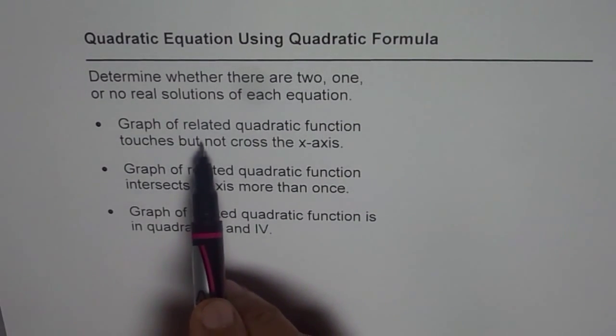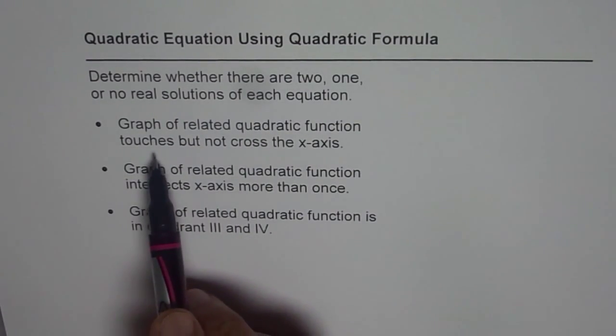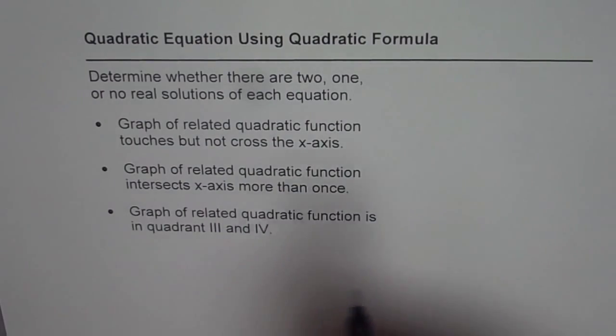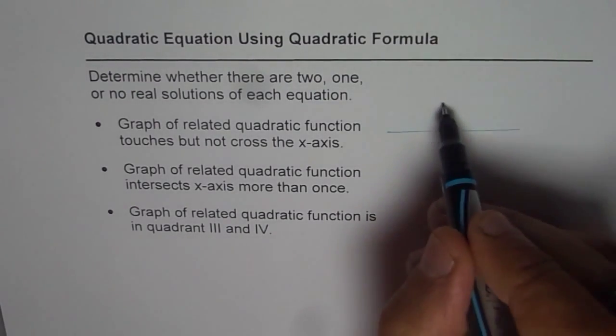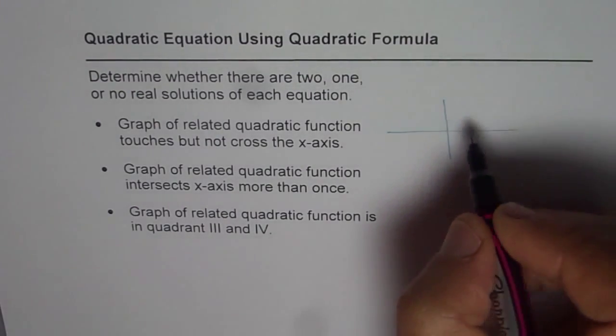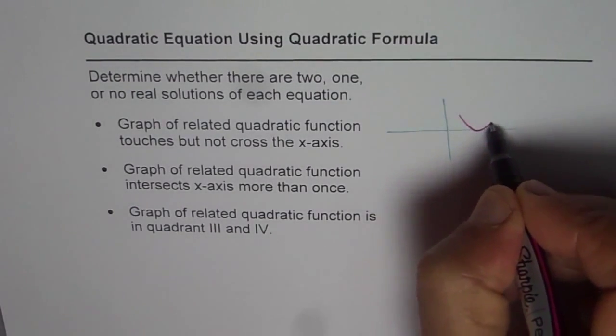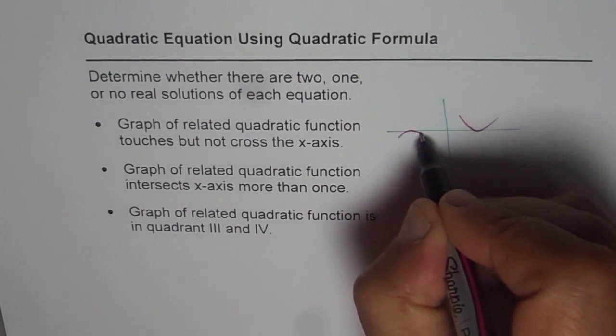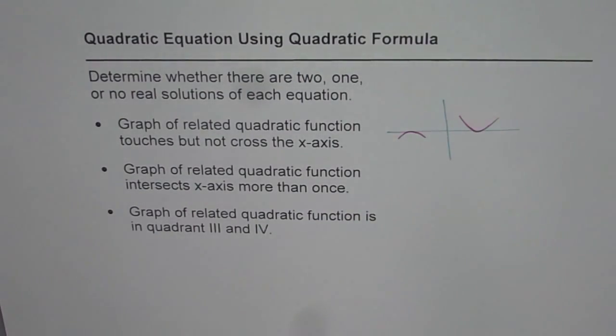Graph of related quadratic function touches but not crosses the x-axis. So that is kind of a situation where the graph could be touches but not crosses, or kind of like this. How many solutions do you expect?